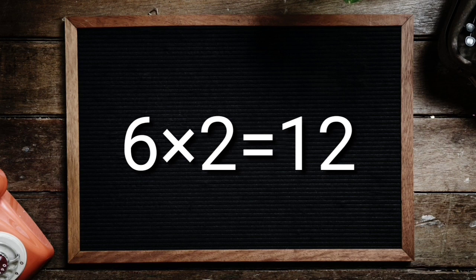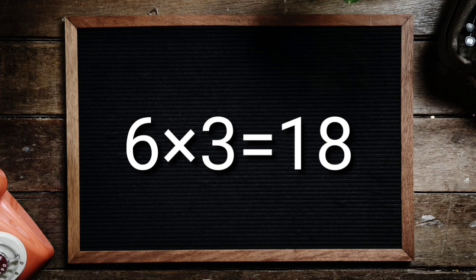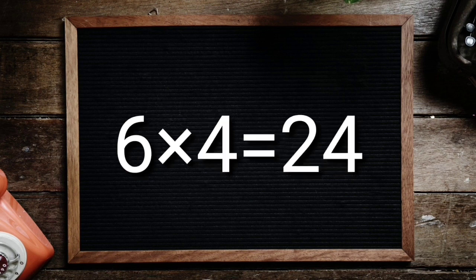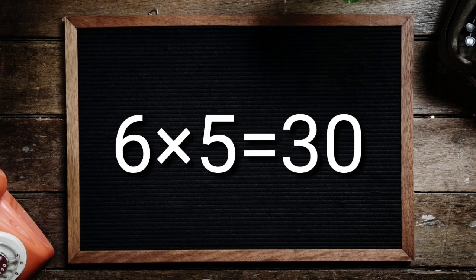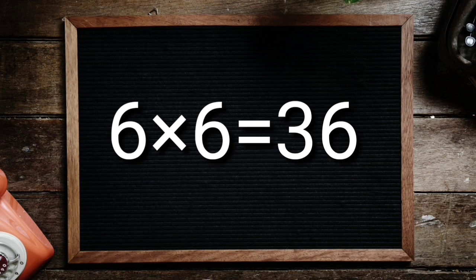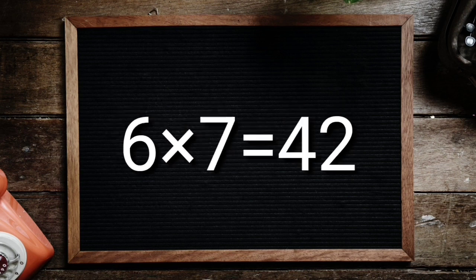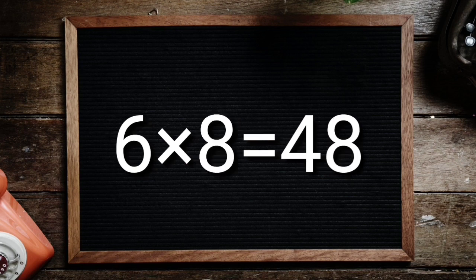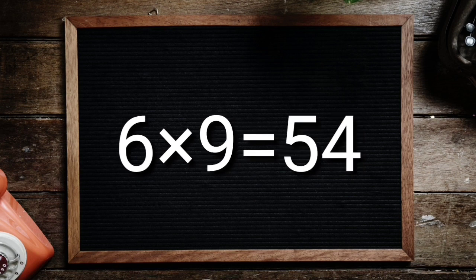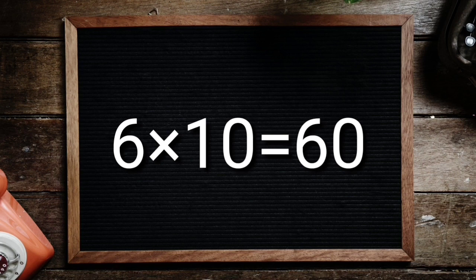Table of 6. 6 1's are 6, 6 2's are 12, 6 3's are 18, 6 4's are 24, 6 5's are 30, 6 6's are 36, 6 7's are 42, 6 8's are 48, 6 9's are 54, 6 10's are 60.